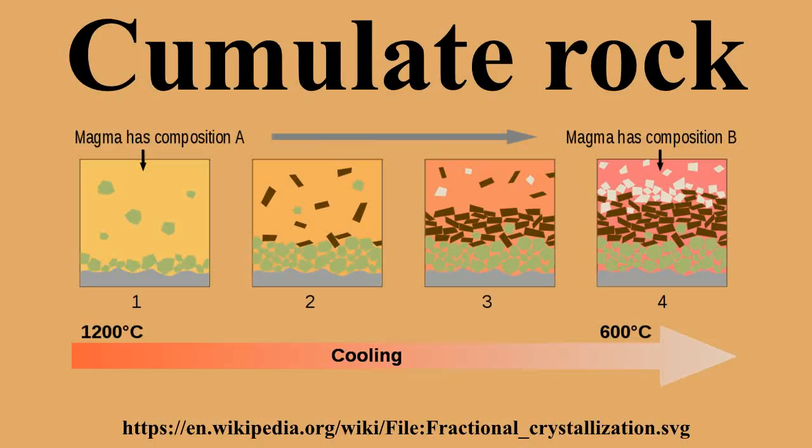Cumulate rocks are the typical product of precipitation of solid crystals from a fractionating magma chamber. These accumulations typically occur on the floor of the magma chamber, although they are possible on the roofs if anorthositic plagioclase is able to float free of a denser mafic melt. Cumulates are typically found in ultramafic intrusions, in the base of large ultramafic lava tubes in komatiite and magnesium-rich basalt flows, and also in some granitic intrusions.